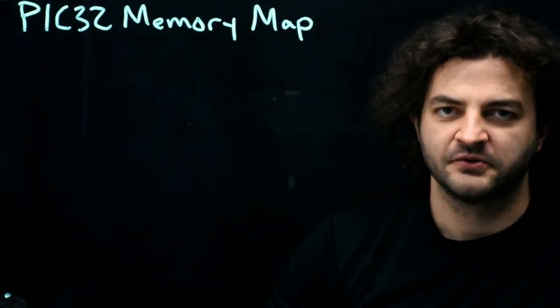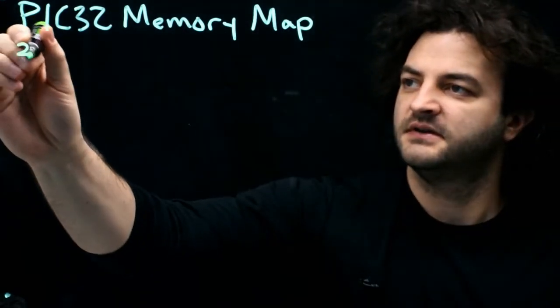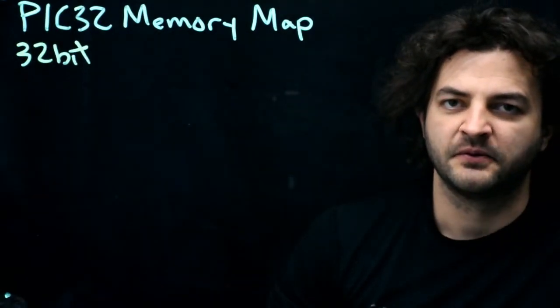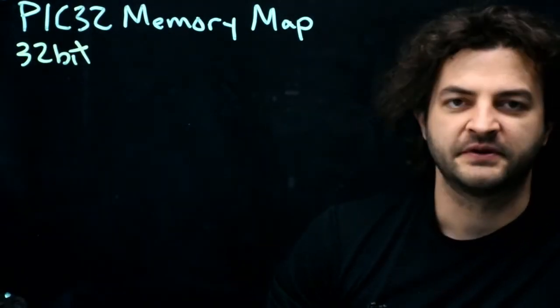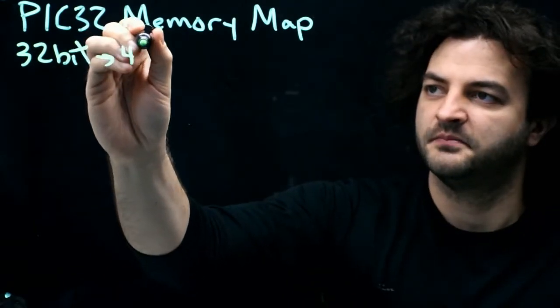Let's look at how the memory is organized inside of the PIC. This is a 32-bit system, which means that every address for the eight bits of memory is stored with a 32-bit number, and an unsigned 32-bit number goes to four billion something. So there's four billion addresses because every address can be stored with this unsigned 32-bit number.